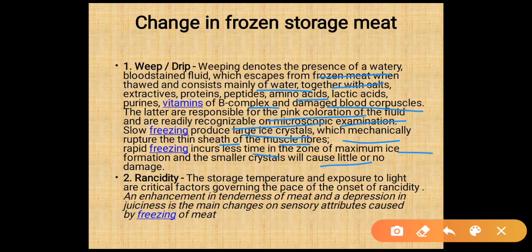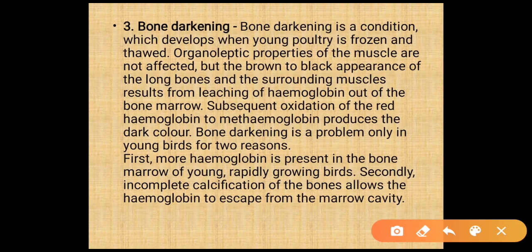Rancidity: storage temperature and exposure to light are critical factors governing the onset of rancidity. Freezing causes enhancement in tenderness but depression in juiciness. Bone darkening is a condition that develops when young poultry is frozen and thawed. Organoleptic properties of muscles are not affected, but brown to black appearance of long bones and surrounding muscles results from leaching of hemoglobin out of the bone marrow and subsequent oxidation of hemoglobin to metmyoglobin.